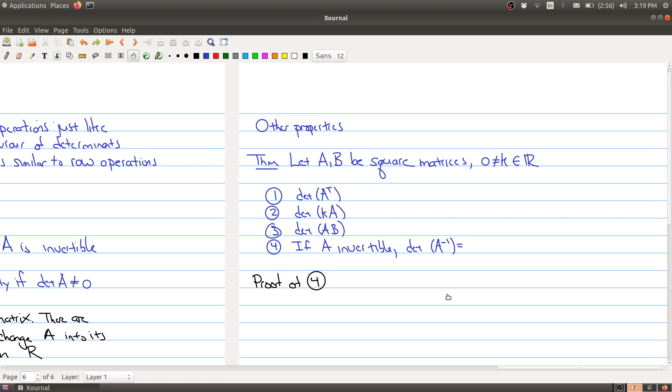The first theorem captures many of these results. We have some square matrices and some non-zero constant. The first statement tells us about the determinant of the transpose, and the determinant of the transpose is actually the exact same thing as the determinant that you started with.